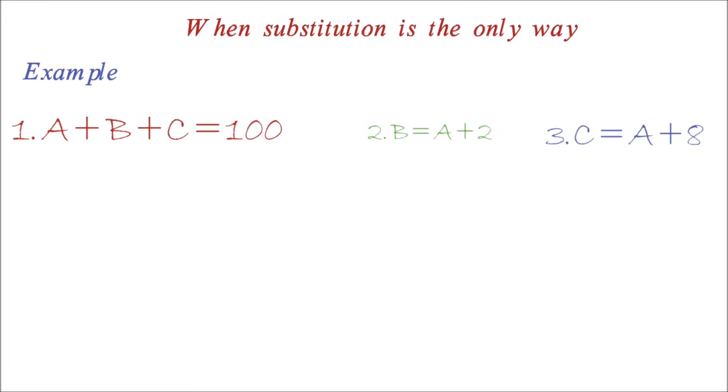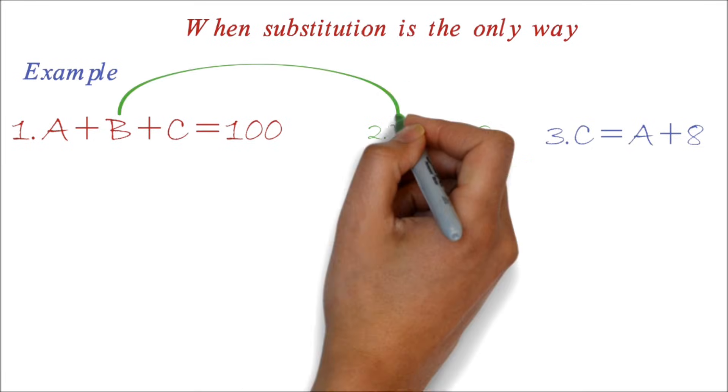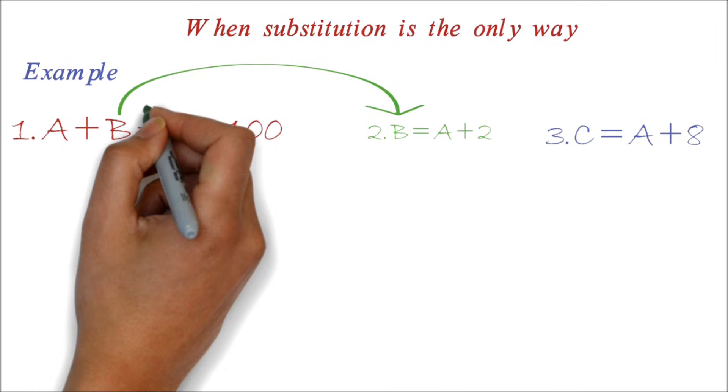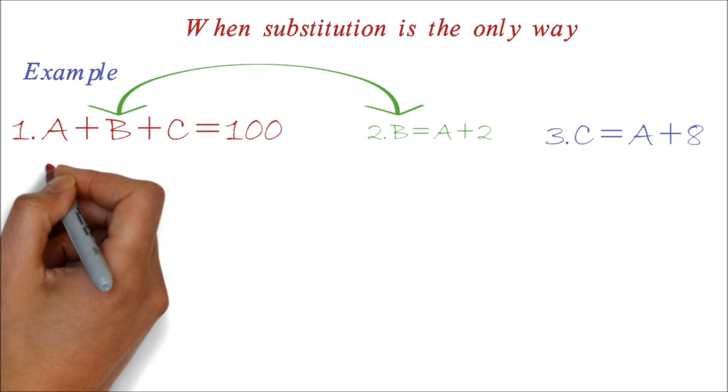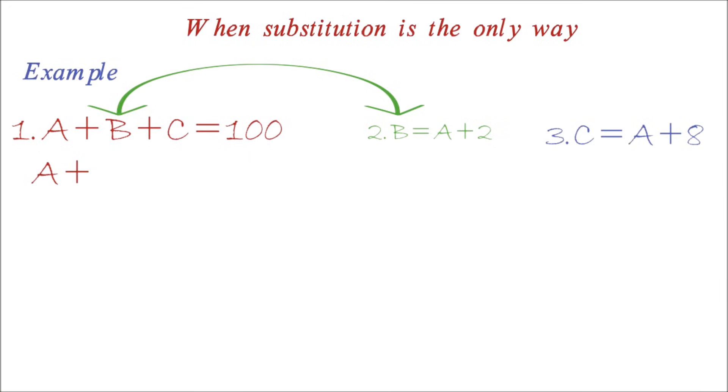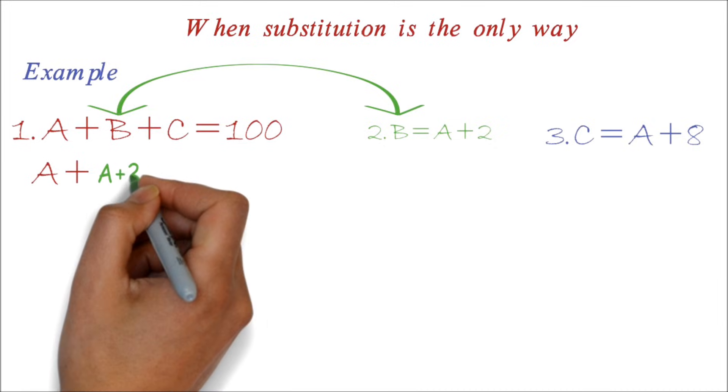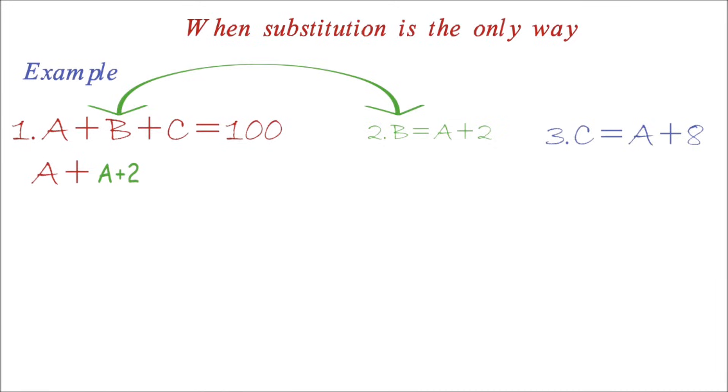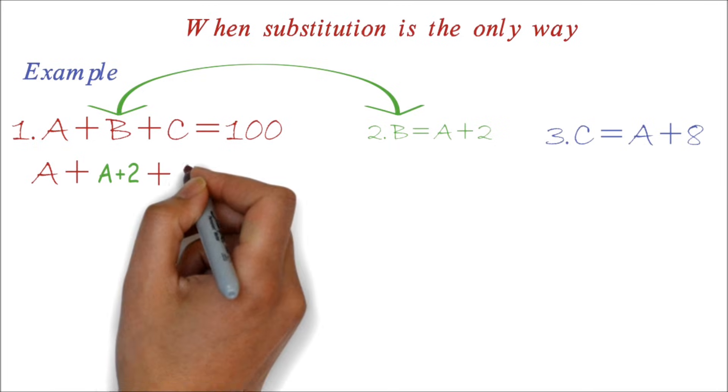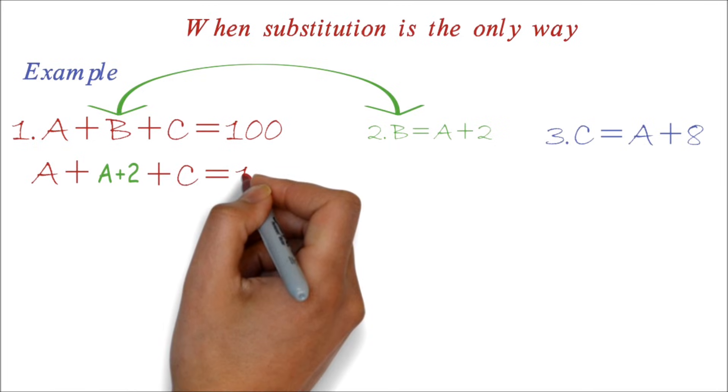For questions like this, we want to substitute such that we have an equation with only one letter or variable. In this particular example, we can substitute the B in equation 1, so we have A plus, now instead of the B, we put A plus 2. Then we have plus C equals 100.